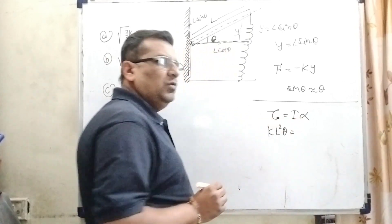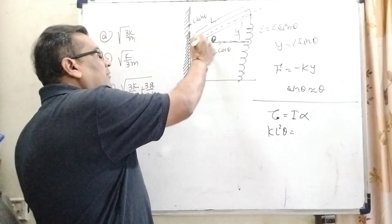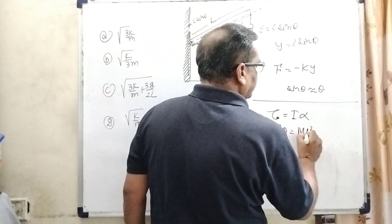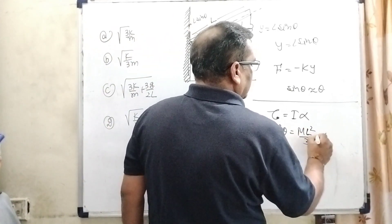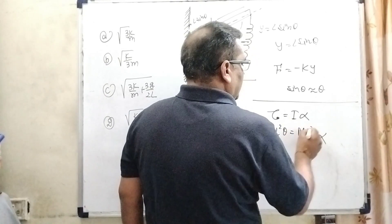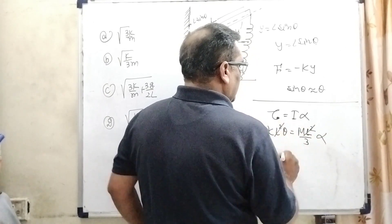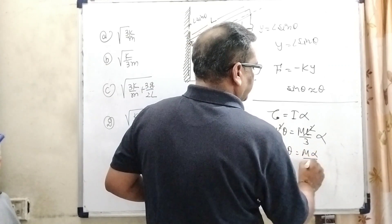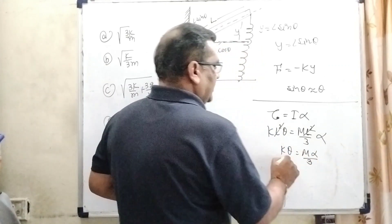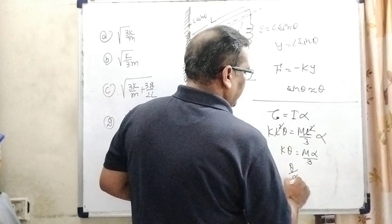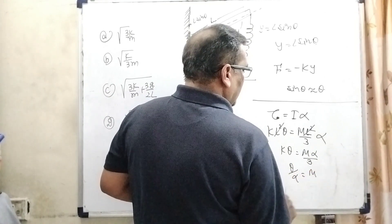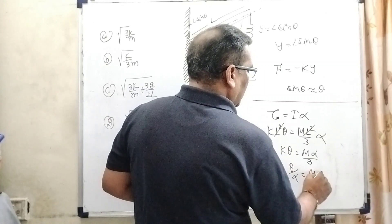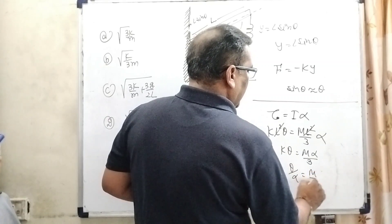As we know, the relation between torque and moment of inertia is tau equals I·alpha. Here tau is k·L²·theta. The moment of inertia of the rod from one end is I equals M·L²/3. The L² terms cancel out, giving k·theta equals (M·alpha)/3, which rearranges to theta/alpha equals M/(3k).